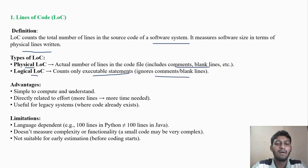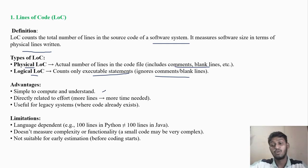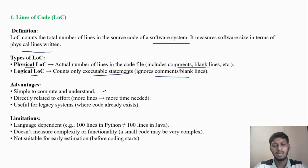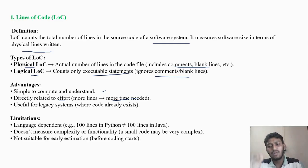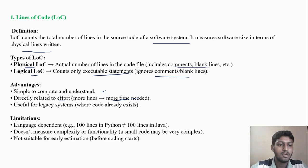Advantages of LOC: it is simple to compute and understand. On the basis of 18 lines, we can determine our cost and time. It is directly related to effort — more lines means more time needed. If you have written 25,000 lines, you will need much more time than if you have written only 5 lines.